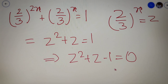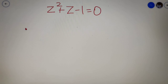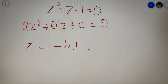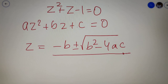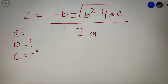So finally the equation we have got is a simple quadratic equation in z, in the form of az squared plus bz plus c equals 0. We can solve this using the Sridharacharya method: z equals minus b plus or minus under root of b squared minus 4ac, whole divided by 2a. The values from our equation are a equals 1, b equals 1, and c equals minus 1.